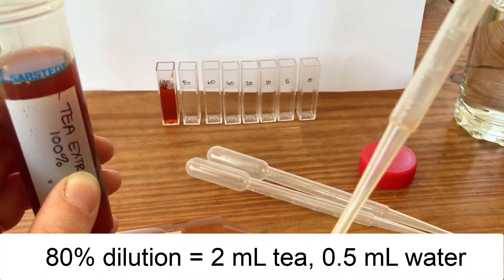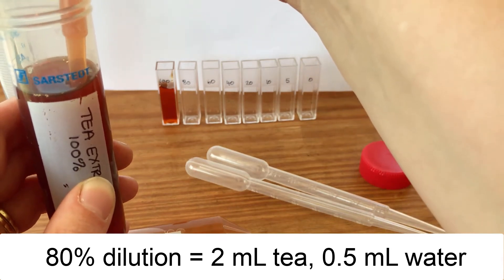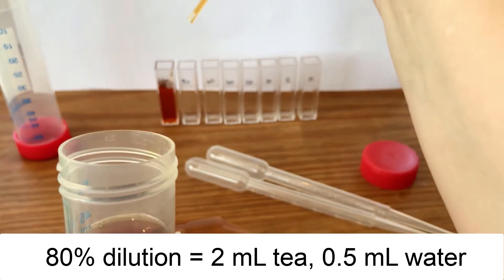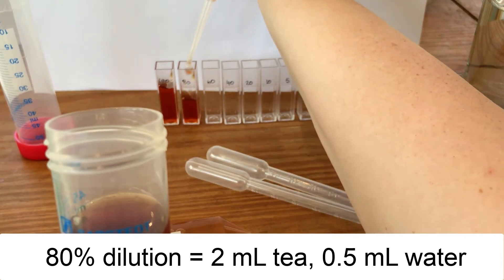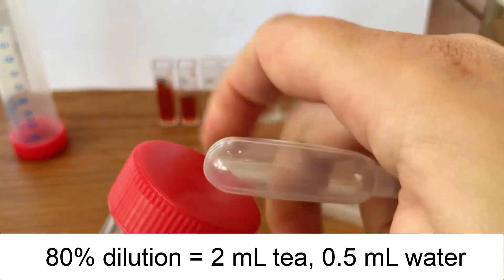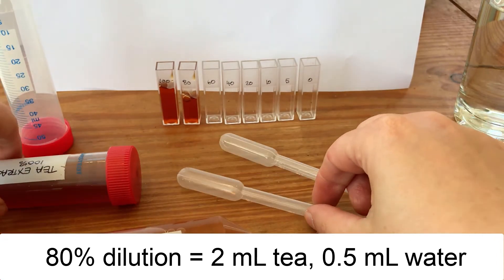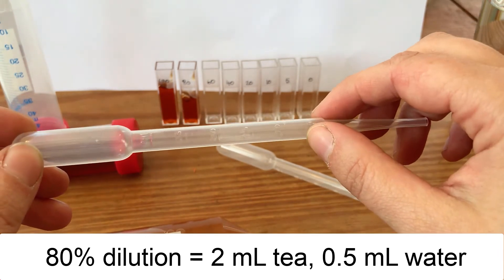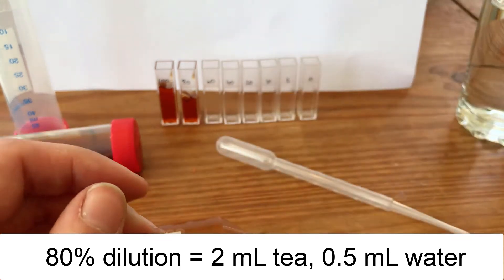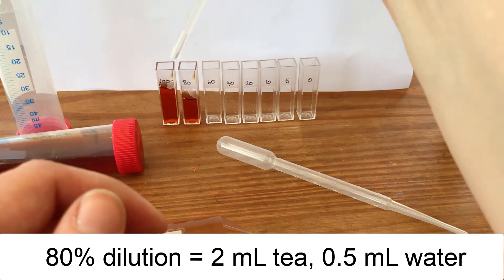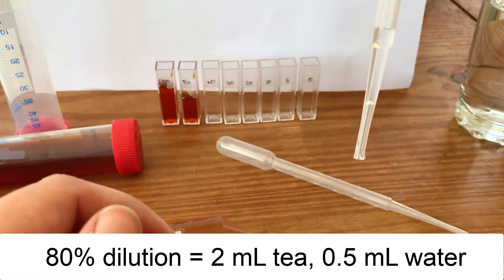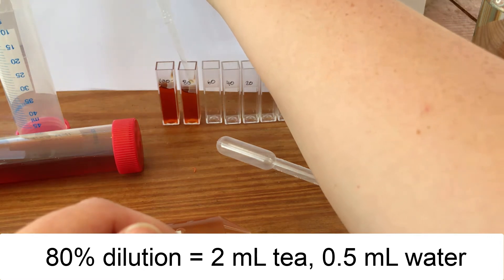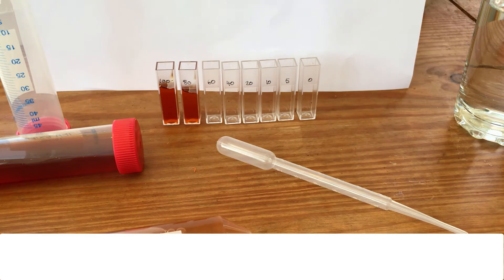So I'm going to take 2 ml, and again the more precise that you can be with this the better, so take it to 2 ml, you can just about see that on my pipette, and put that in the 80%. Then I need to dilute that with the water. We've got 2 ml of tea, four parts, so each part is 0.5 ml. So we had four parts which is 2 ml of tea and then I'm going to take 0.5 of water. You can see there I've got 0.5 of water, and again do this as accurately as you can so the meniscus is in the right place, and add that to my tea. I'm just going to push that down so that should hopefully be a little bit more dilute than the hundred percent.